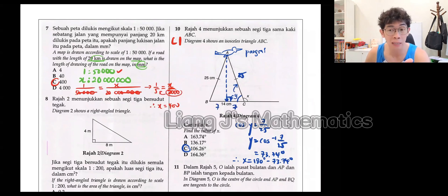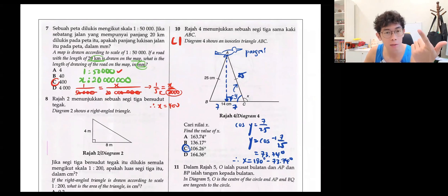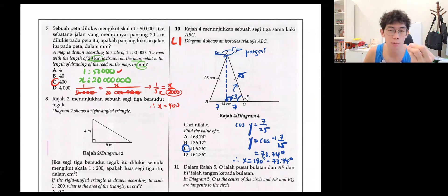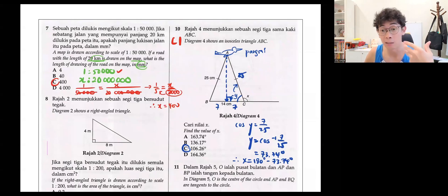Any chapter that links to lengths and angles — trigonometry. When you see trigonometry, it links to right angle triangle. But you don't have to draw a line to convert it. So that's the idea.